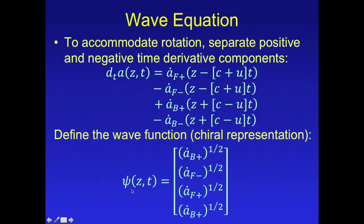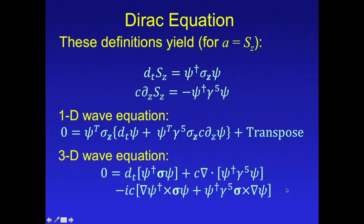Okay, so we can define the wave function as consisting of these four different components. And when we do that, we get this expression for the z-component of spin angular momentum and this expression for the z-derivative of the spin angular momentum. Okay, now that's a one-dimensional wave equation, and we generalize that to three dimensions. We get this equation on the bottom here.